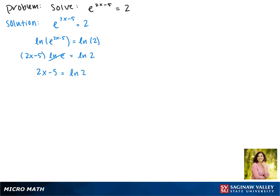Solving for x, we're going to add 5 to both sides. This gives us 2x equals 5 plus the natural log of 2.